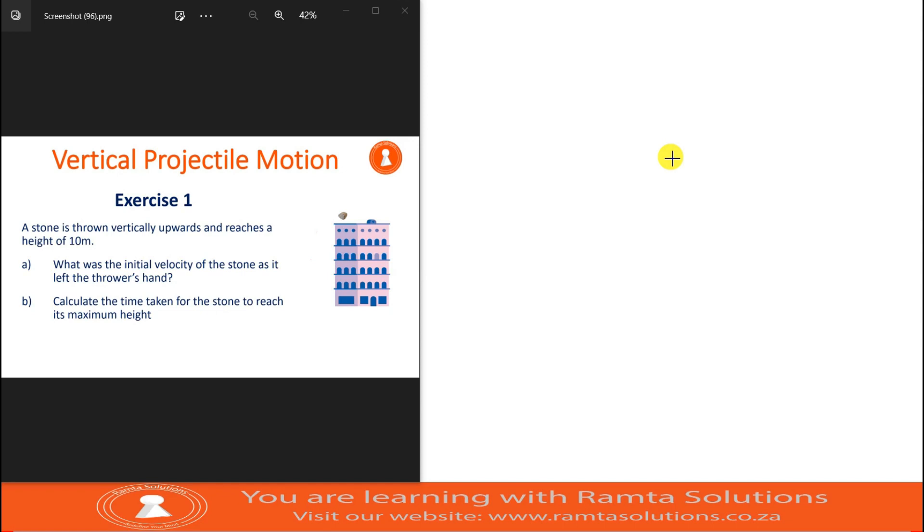Hello guys. Welcome to Remtor Solutions. Today in our lesson of projectile motion we're looking at this example which we call exercise one for the purpose of our series on vertical projectile motion. We are saying a stone is thrown vertically upwards and reaches the height of 10 meters.